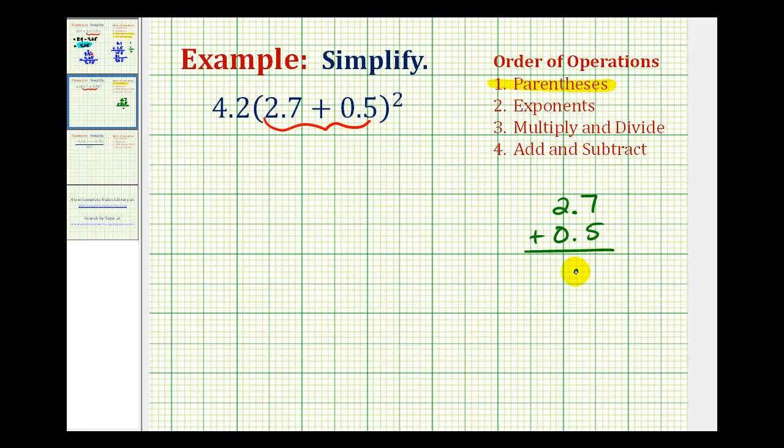Now we'll bring the decimal down into our sum and add as we normally would. So 7 plus 5 is 12, so we carry the 1, 1 plus 2 is 3, so this sum here is 3.2.